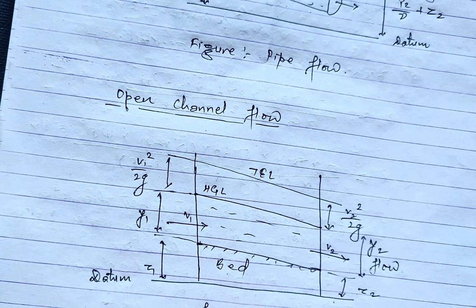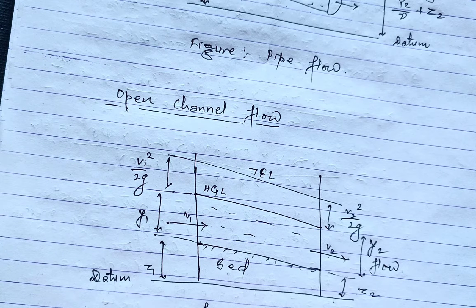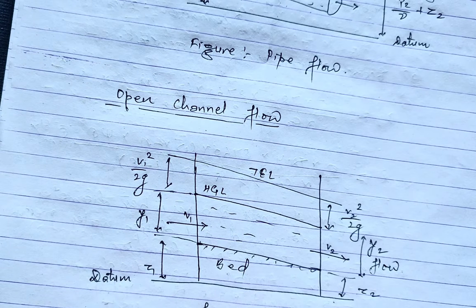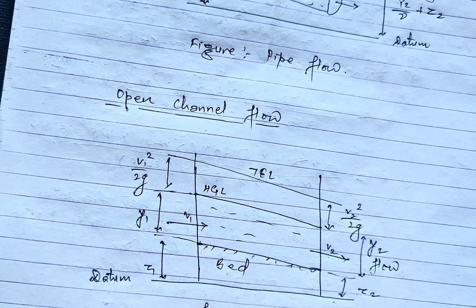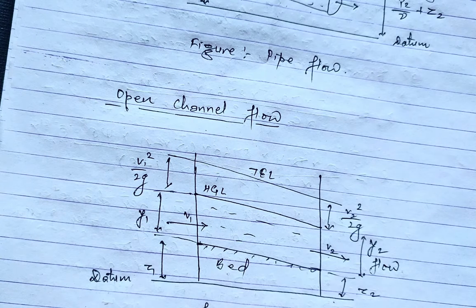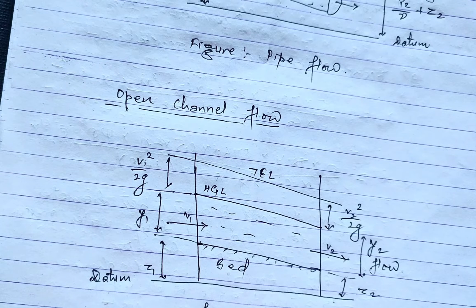An open channel is said when the passage in which the liquid is not completely enclosed by a solid boundary but has a free surface exposed to atmosphere. The flow of liquid in an open channel is called open channel flow.